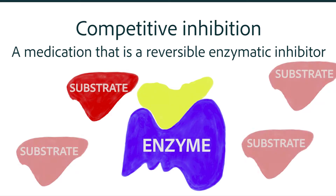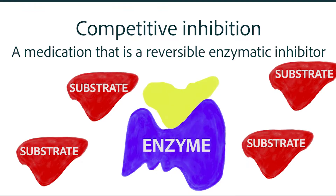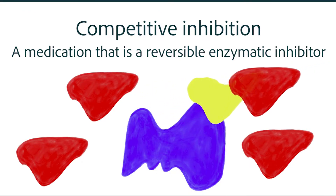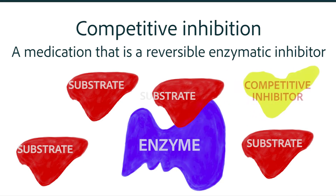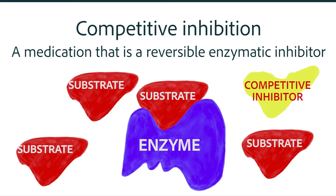Because it is a competition between the medication and the substrate, adding more substrate would normally increase the amount of binding of the substrate. That is the largest group of reversible enzymatic inhibitors, the competitive inhibitors. And when the medication is fully metabolized, there should be no further effects.